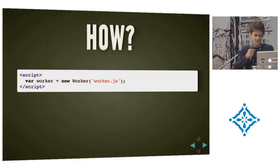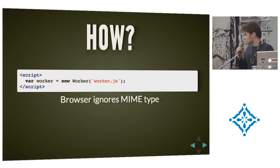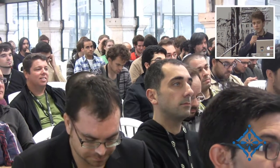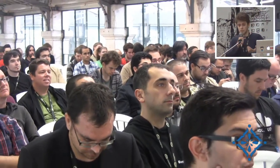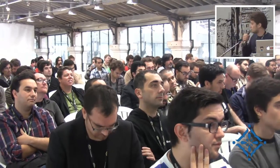This is how you use them: you just create a worker and pass it the path to your script file. The browser ignores the MIME type and always treats the path as JavaScript. Workers are subject to some special rules. They run in a separate parallel execution environment, which in a browser means a separate thread. They have their own event loop and they can't do things like access the DOM or register callbacks on UI events. They can't access window, document, parent, console, and alert — so this makes it a little bit hard to debug.